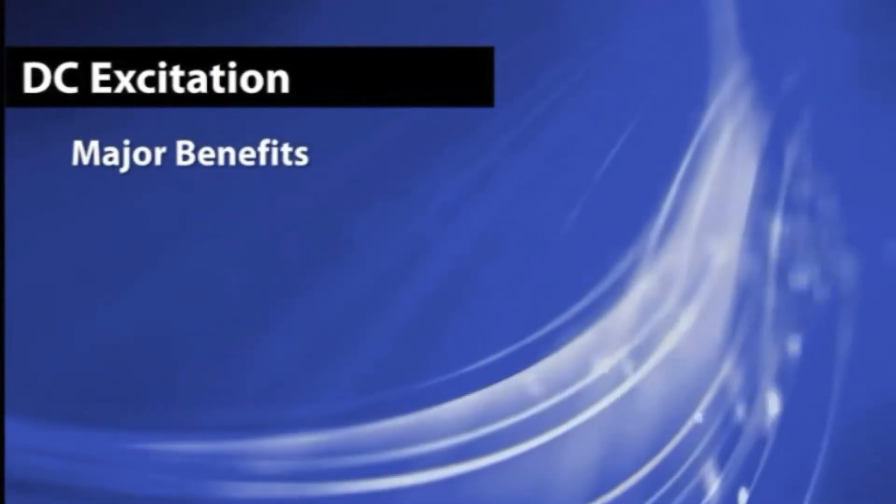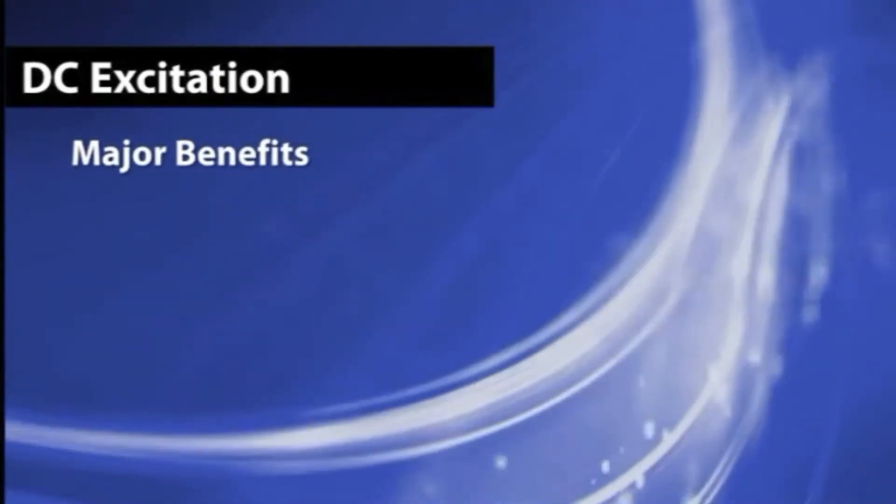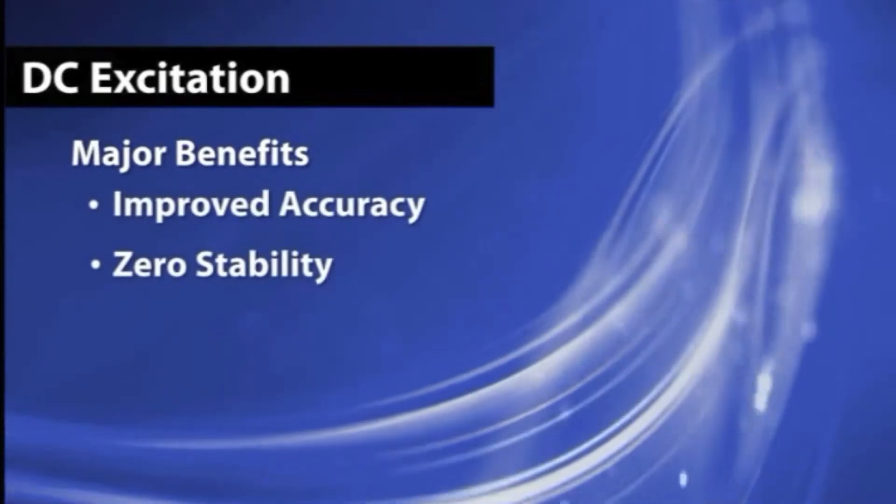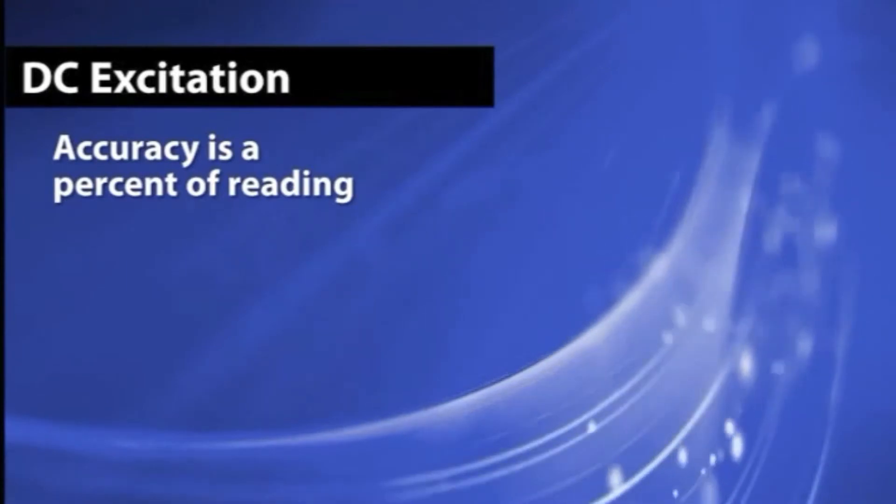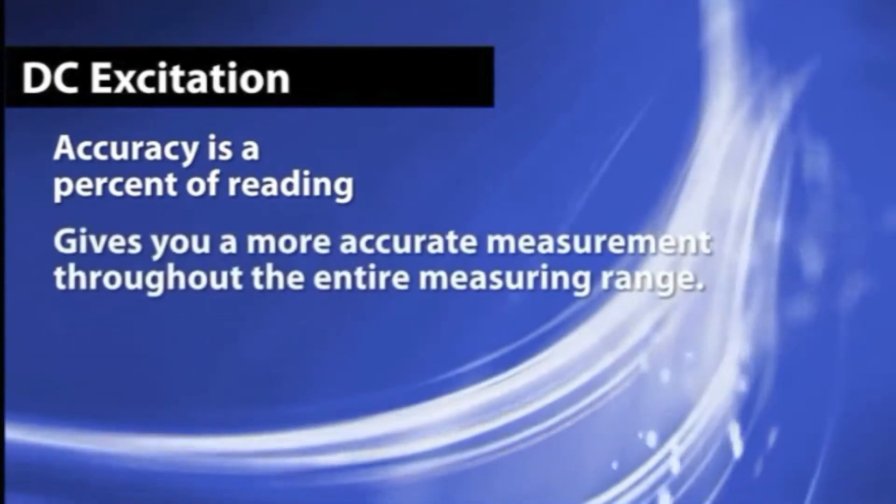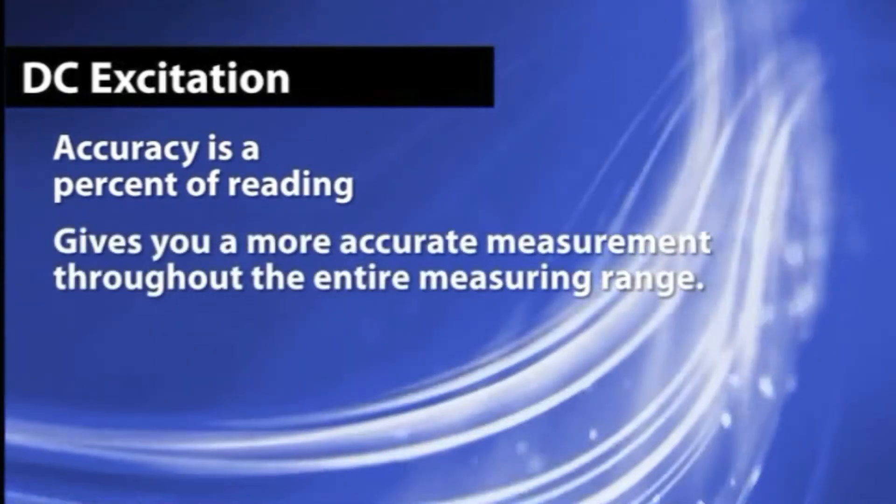The major benefits of pulsed DC excitation over AC excitation is the improved accuracy and zero stability. The accuracy of a DC-type meter is a percent of reading. This gives you a more accurate measurement throughout the entire measuring range.